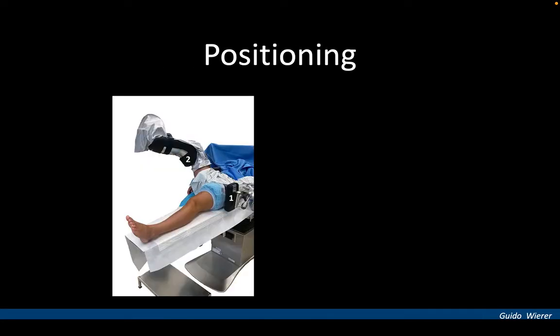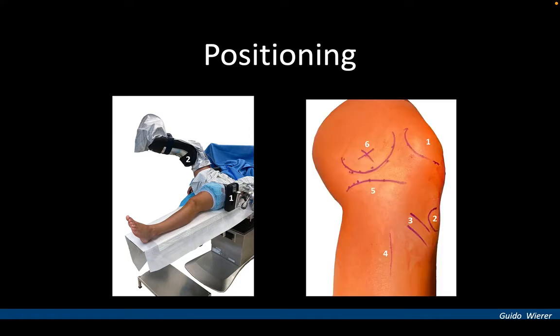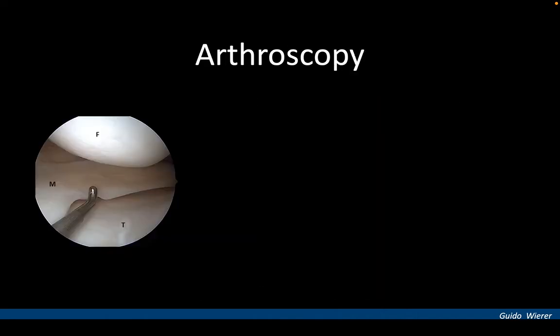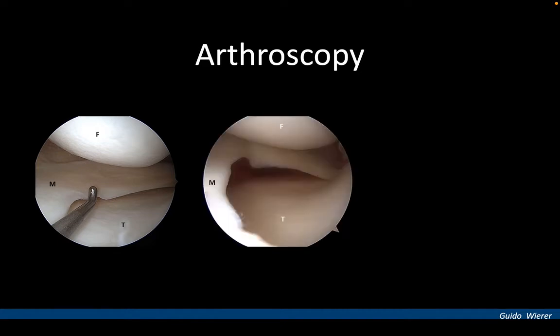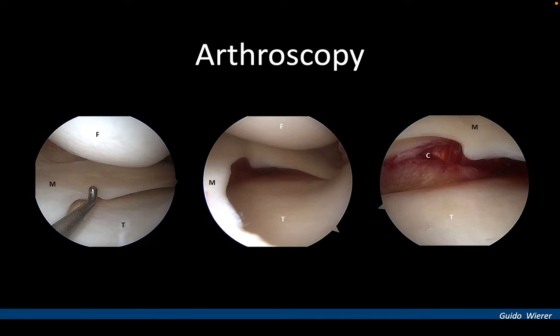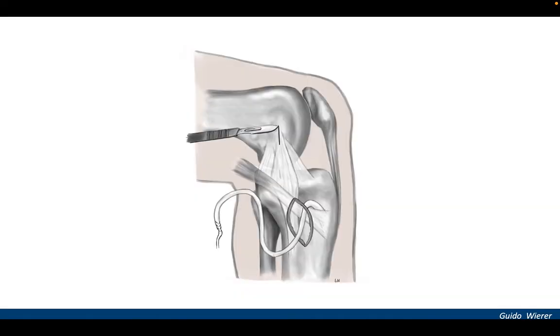For surgery, the patient is placed supine on the operating table. A thigh tourniquet and lateral support are applied. The contralateral leg is put in lithotomy position and relevant landmarks are marked. Arthroscopy of the medial compartment indicates medial gapping under valgus stress. Lift-off of the medial meniscus and meniscal capsular injuries can be observed. The preoperative skin markings guide the minimally invasive approach to the MCL.